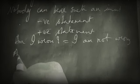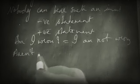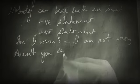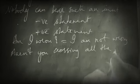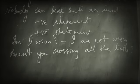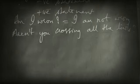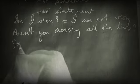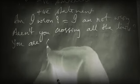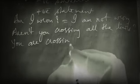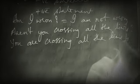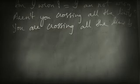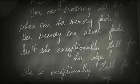Similarly, 'Aren't you crossing all the limits?' is a negative question, so it gives a positive statement: 'You are crossing all the limits.' This is how the sentences change between forms.